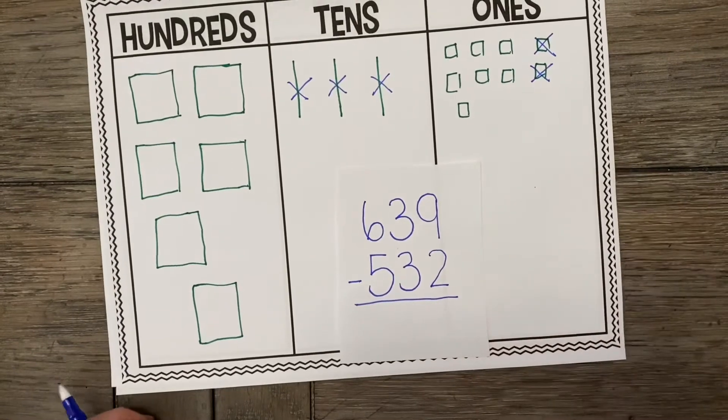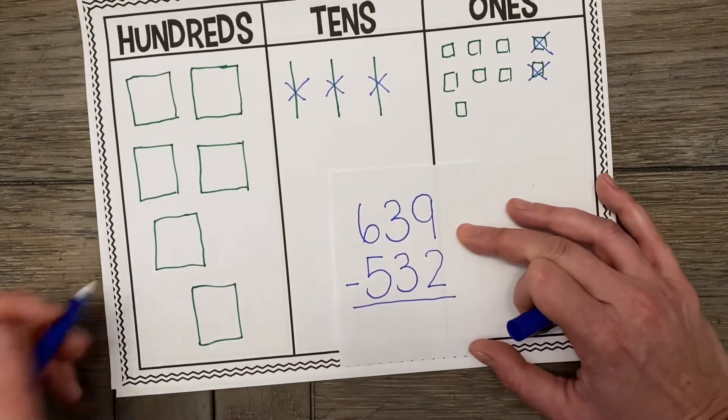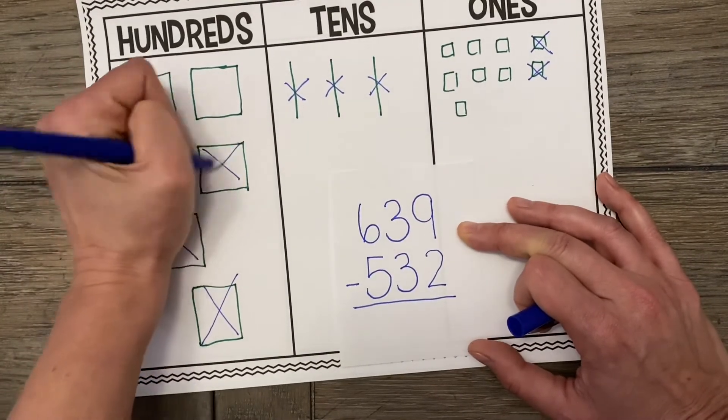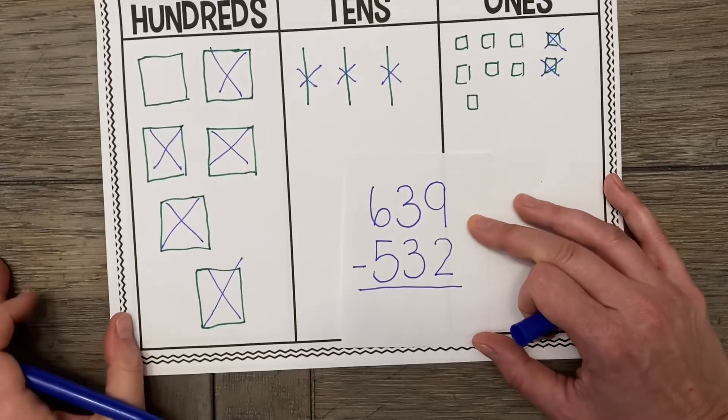And how many 100s are we taking away? Let's count. 5. That's right. So 1, 2, 3, 4, 5. Perfect. Alright.